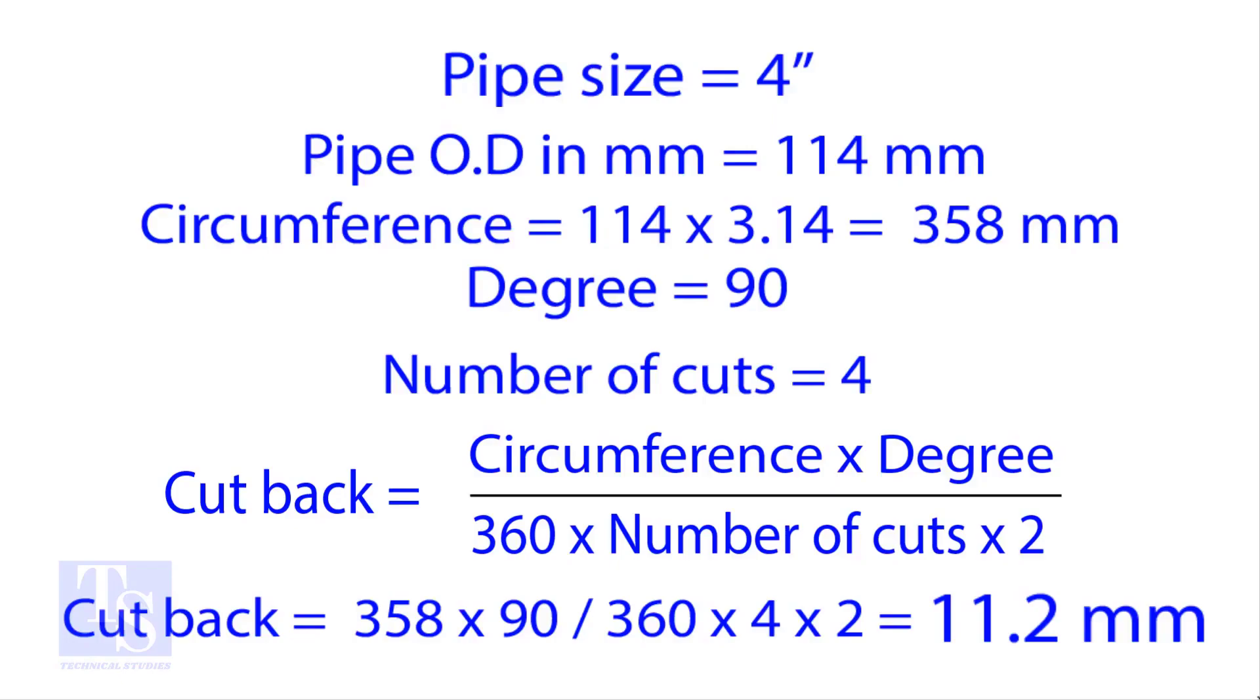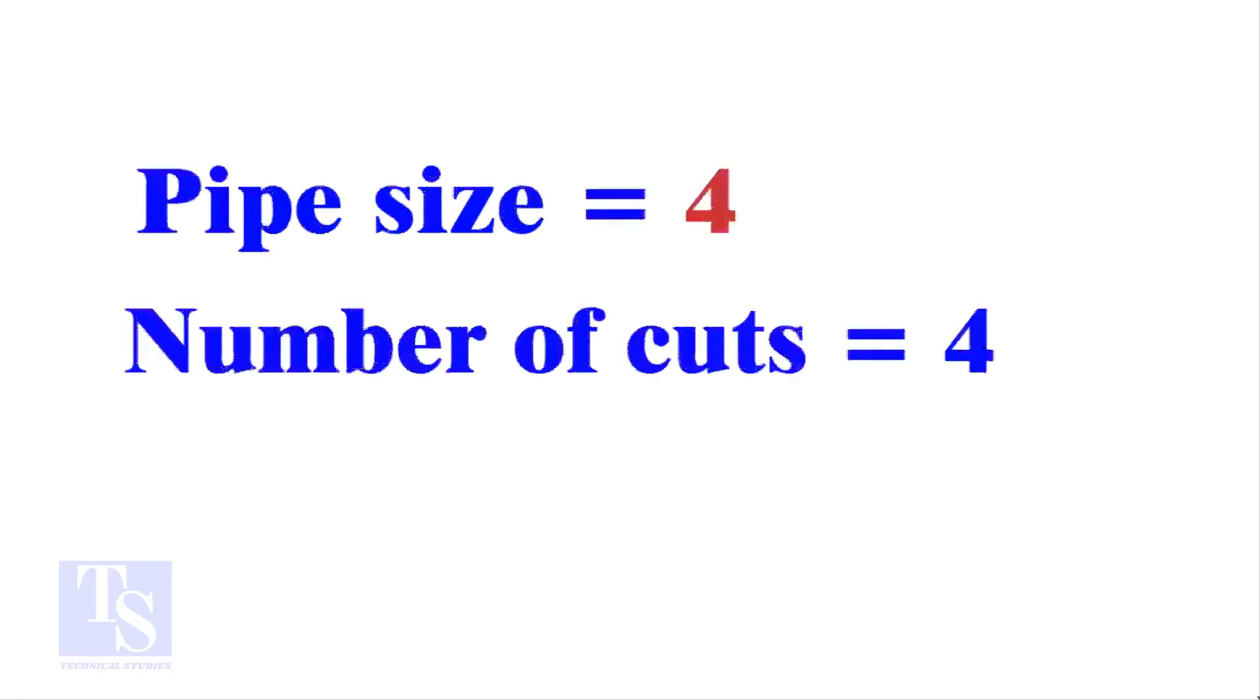Let us try the quick method. See the fast calculation method now. Let the pipe size be 4 inch and the number of cuts also be 4. Remember, you can use any number of cuts up to 9.